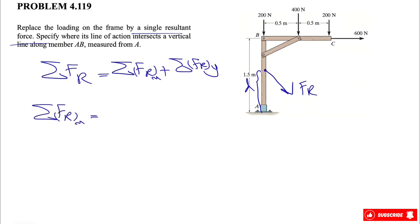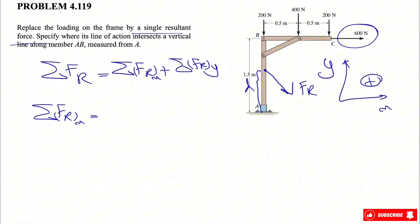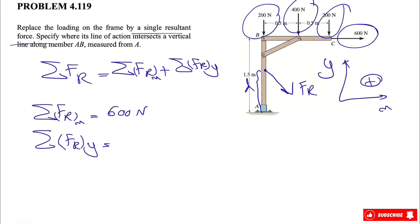The sum of all forces in the x direction: the only force in the x direction is the 600 N force. For the sum of all forces in the y direction, we have three forces, all in the negative y direction: minus 200, minus 400, and minus 200, giving us minus 800 N. The negative sign shows the force is downward.